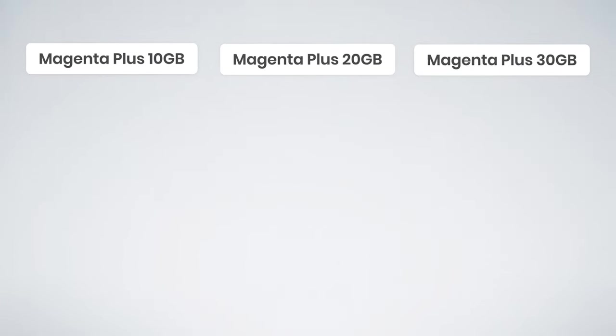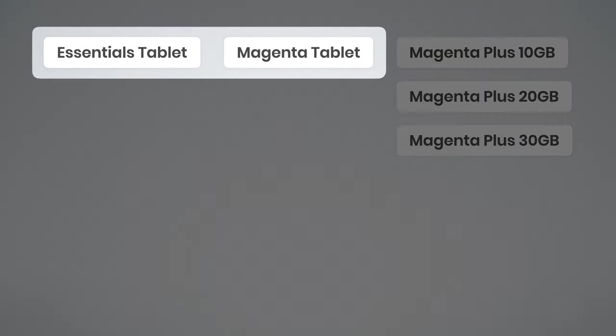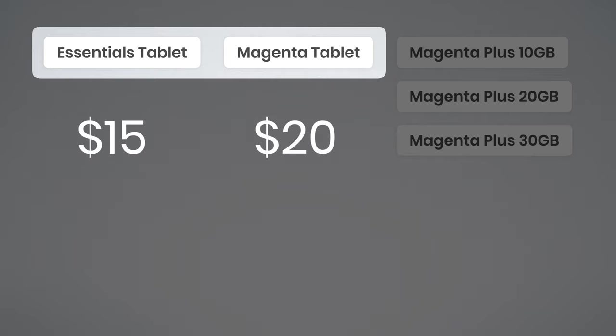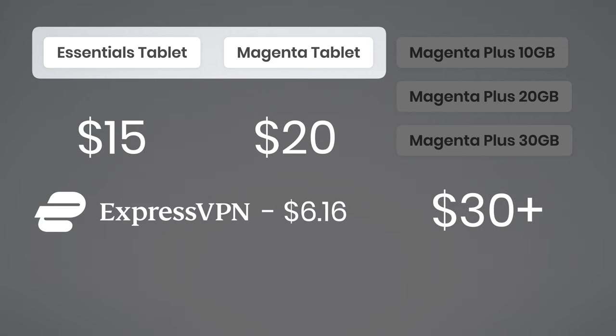So which of these tablet plans are worth it? Honestly, I think Essentials for Tablets and Magenta for Tablets are the two best options — they're the most affordable. Instead of upgrading to Magenta Plus for $10 extra per month, you can just grab a VPN to enable HD video streaming on either Essentials or Magenta for Tablets.